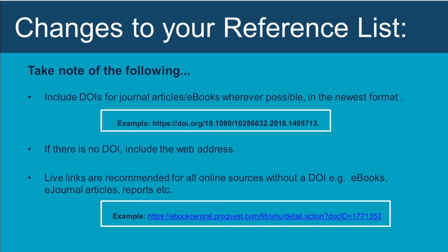DOIs are like a barcode for a product and are very common for ebooks and digitally available journal literature. If there is a DOI, include it and follow the format shown. If you cannot locate a DOI, there probably isn't one available, so include a full web address instead. APA 7 also recommends that live links be included in your reference list.